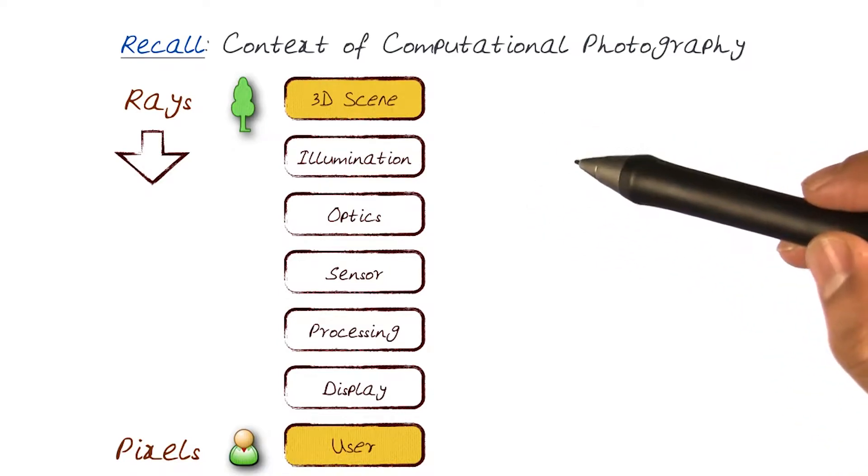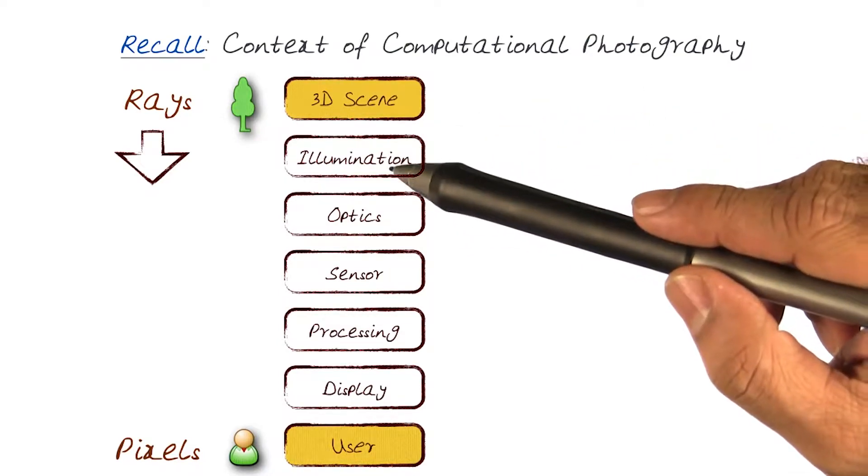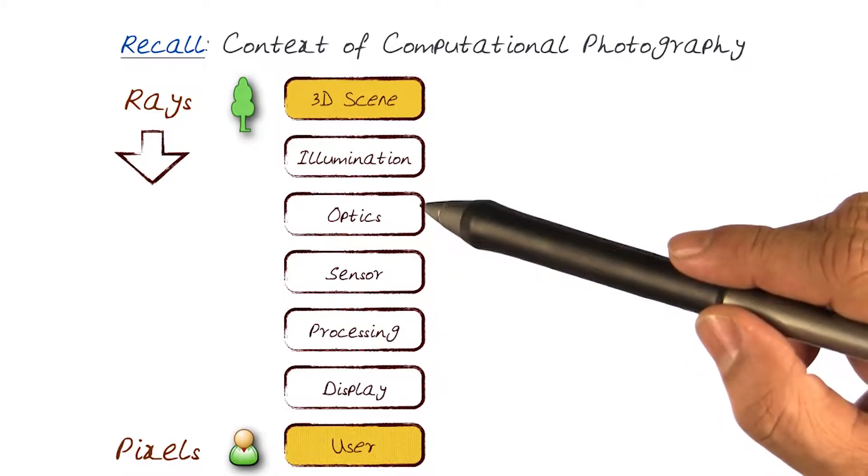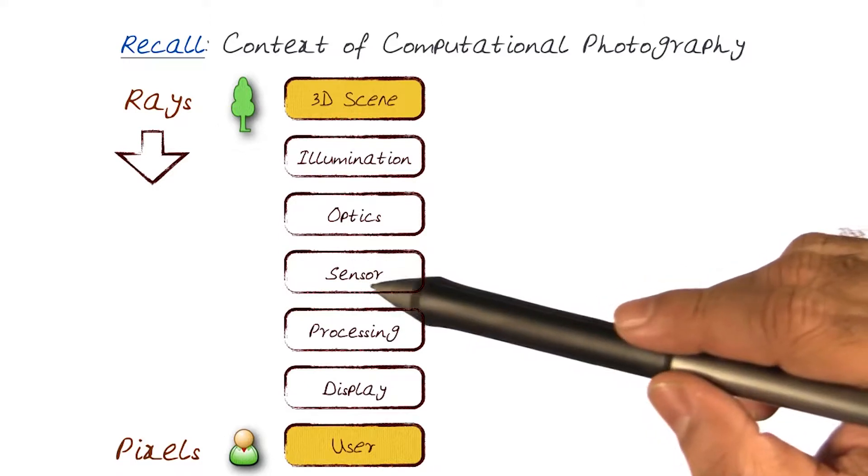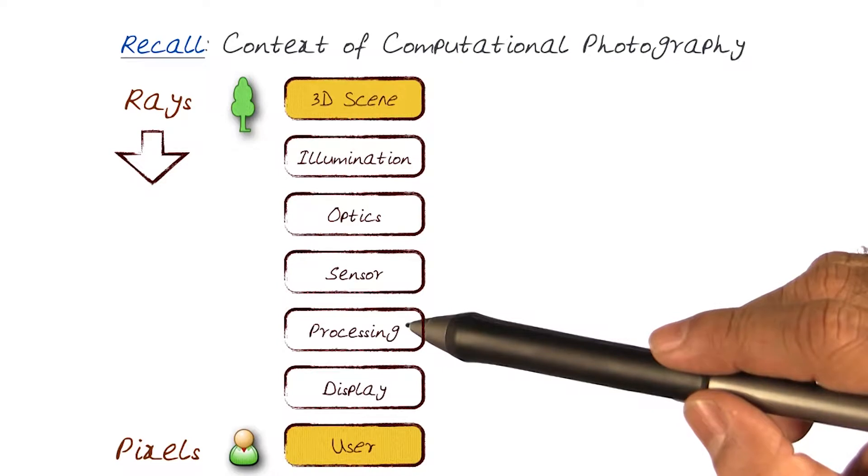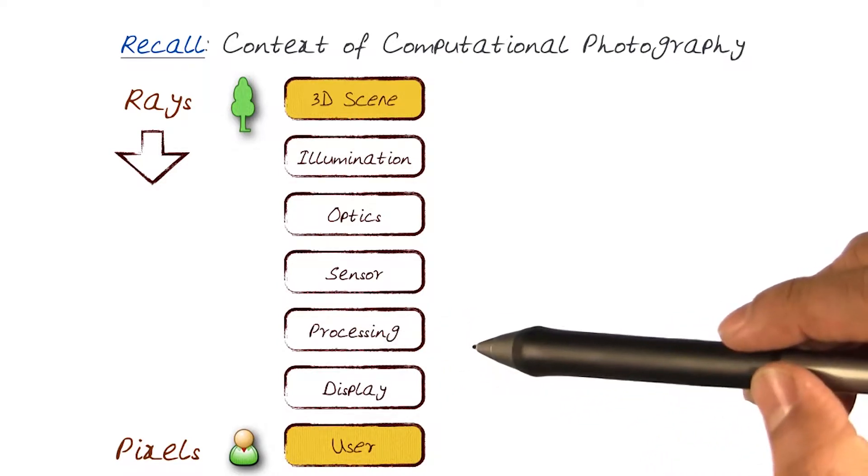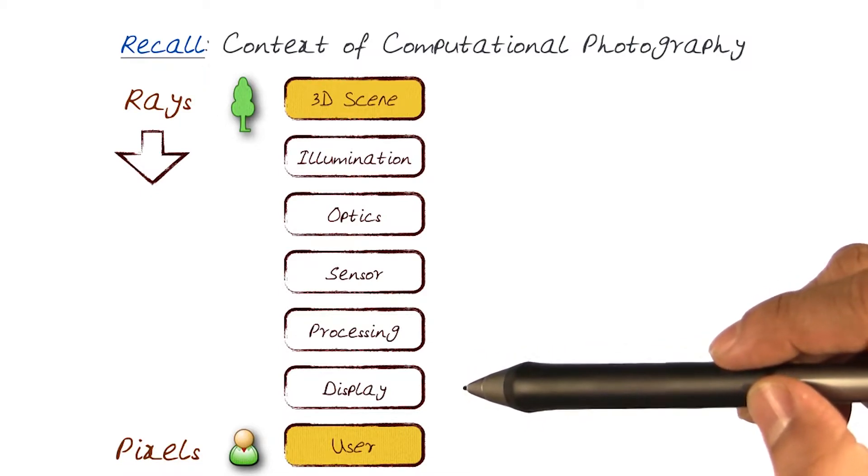In the traditional aspect of computational photography, we start with a 3D scene that is illuminated. Optics is used to get information from the scene onto a sensor which converts it into pixels. We've looked at in detail how image processing techniques can take the pixels for enhancement or analysis of images, like finding features that we then use for various computational photography processes.